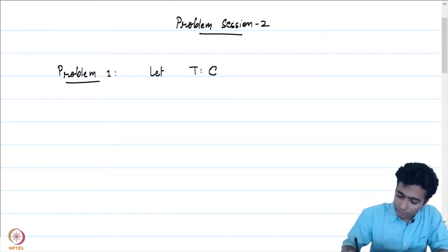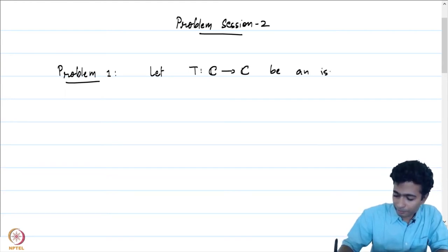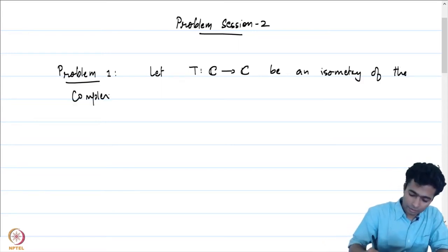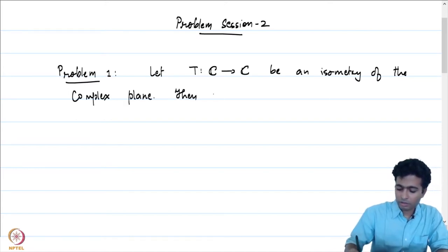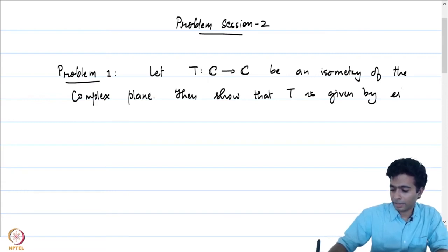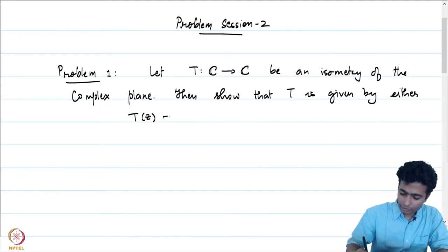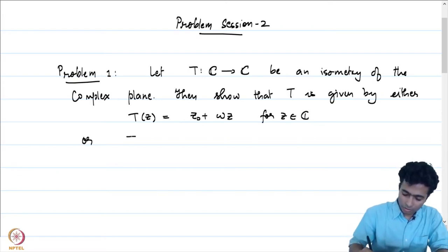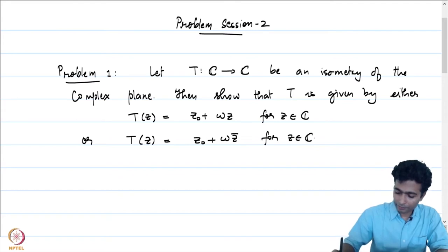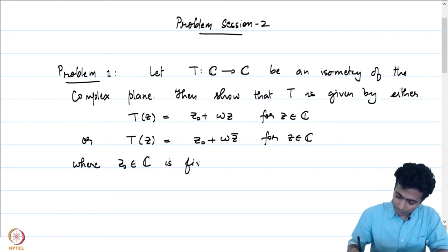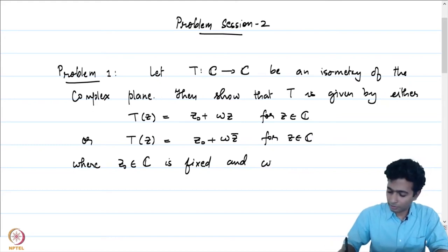The first problem: let T be a map from ℂ to itself that is an isometry of the complex plane. Then T is given by either T(z) = z₀ + ω·z for z in ℂ, or T(z) = z₀ + ω·z̄ for z in ℂ, where z₀ is a fixed complex number and ω is some element in S¹, a phase.